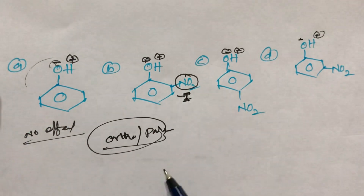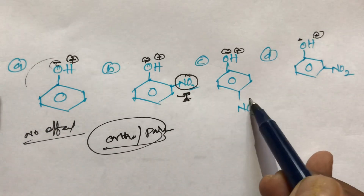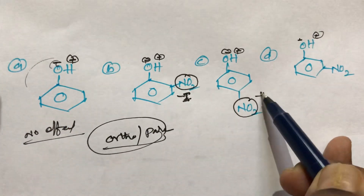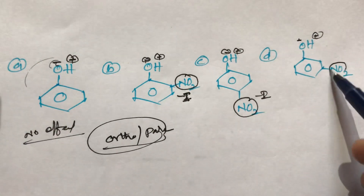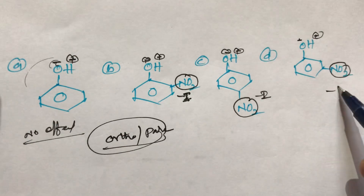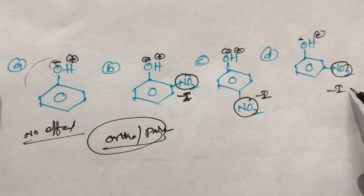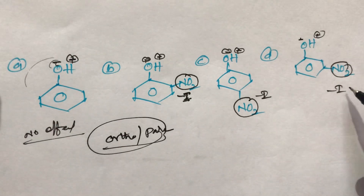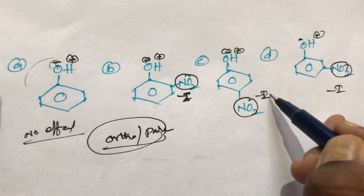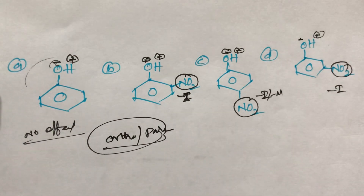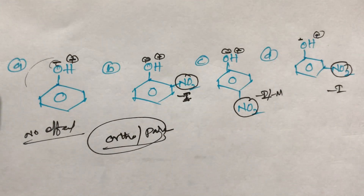The NO₂ group belongs to the -I effect. The third compound also has -I effect and the fourth compound also has -I effect. Most importantly, this NO₂ group belongs to both -I and -M effects.